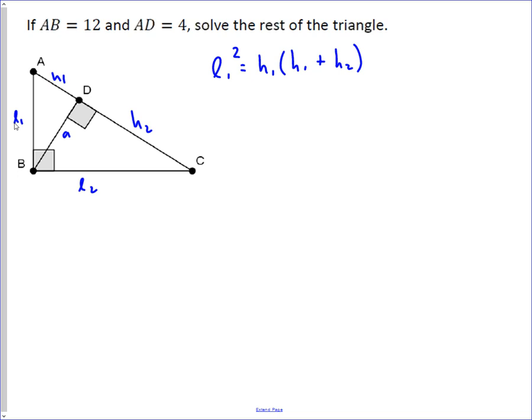Now, what we're given on this problem is that AB is 12 and AD is 4. So to use this, we need to find something for H2, but we don't know what it is. That's the point of the problem, so we're going to call that X.